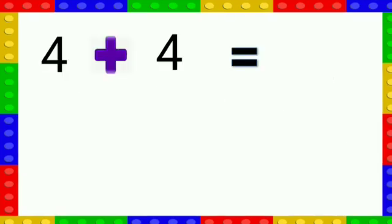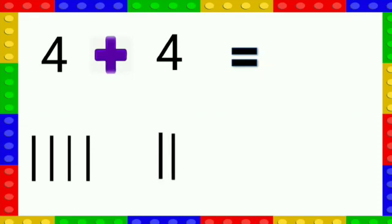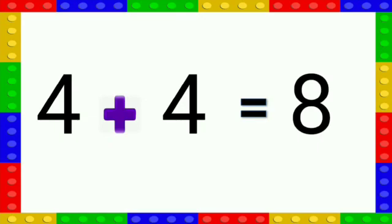Four plus four. Now open four fingers. One, two, three, four. And four fingers on the other hand. One, two, three, four. Now count all fingers. One, two, three, four, five, six, seven, eight. Four plus four is equal to eight.